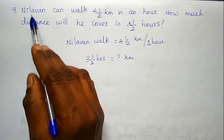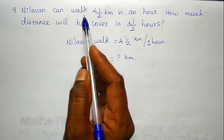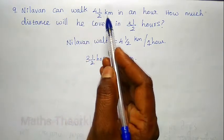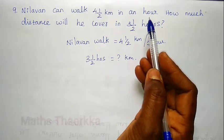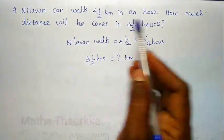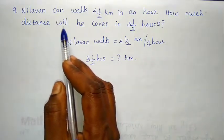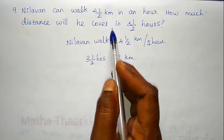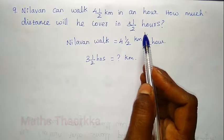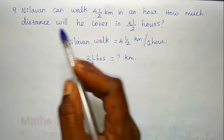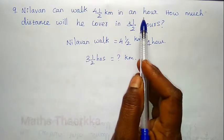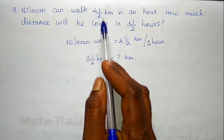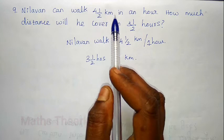Next, problem 1.1.9. A person can walk 1.4 km in one hour. How much distance will he cover in 3 and a half hours?